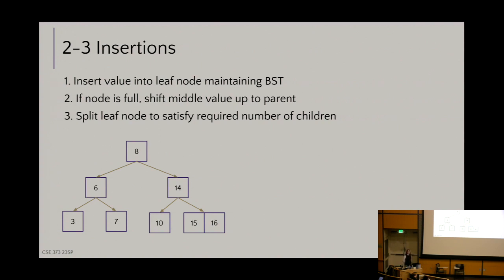How do we do insertions? Just like with AVL, we insert a value into a leaf node maintaining the BST ordering property first. A node is full if there are already two values stored in it. If the node is full, I temporarily place the third value there, then take the middle value of the three and percolate it up — which spreads data density upward on the tree instead of downward, maintaining runtime.